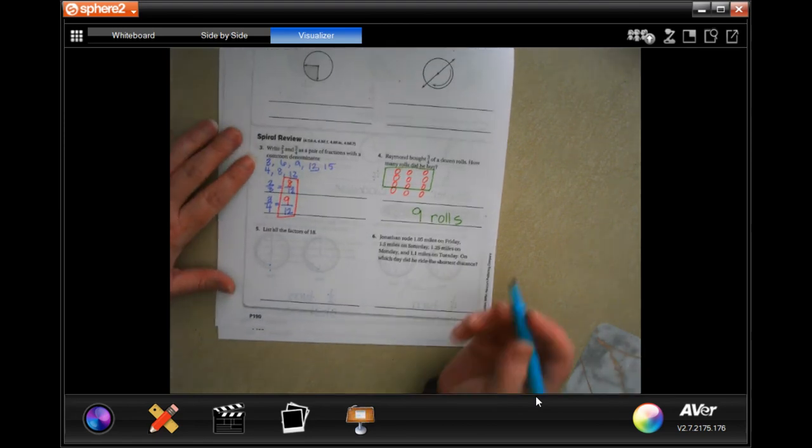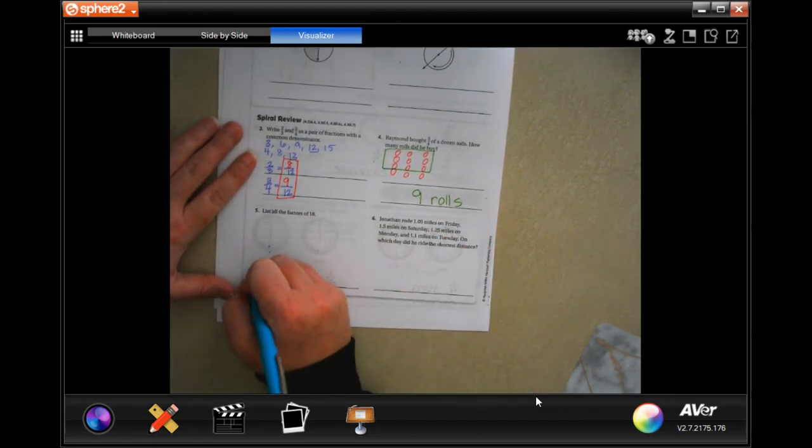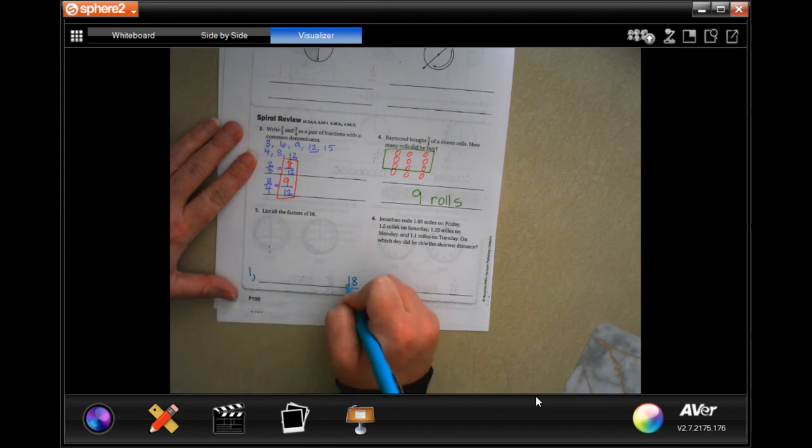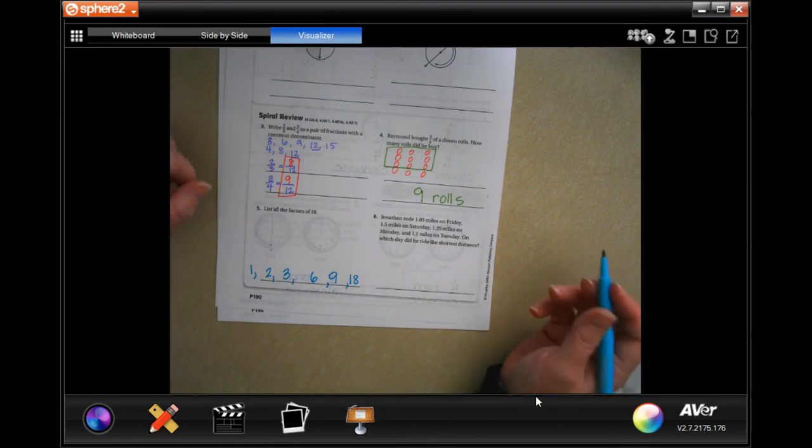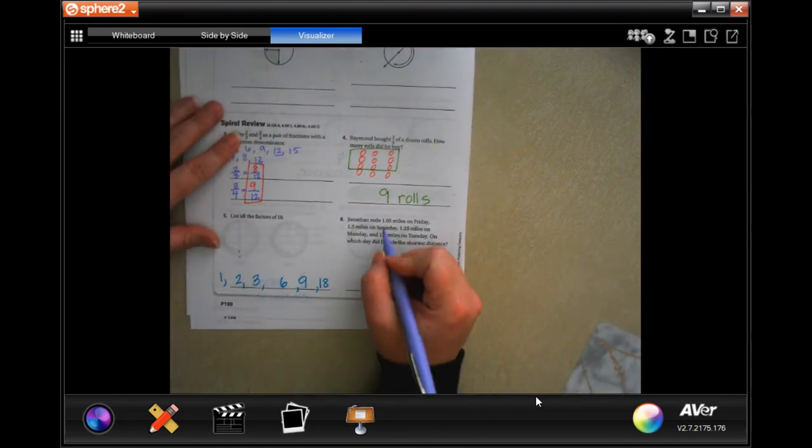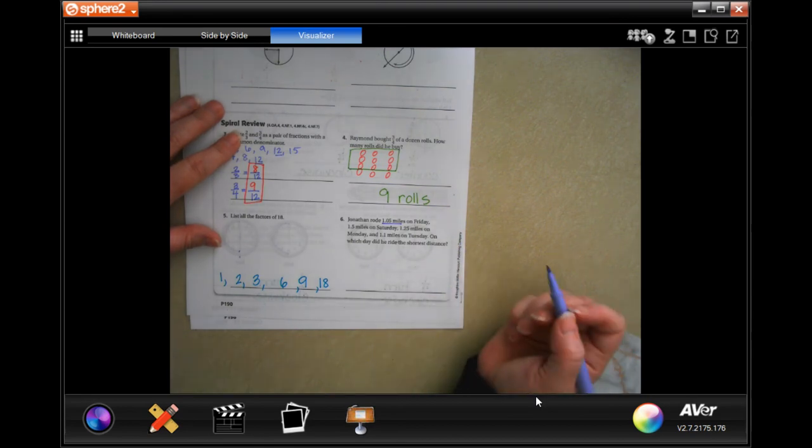List all the factors of 18. Well, we would have one times 18, two times nine, and three times six. Done.